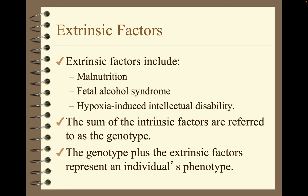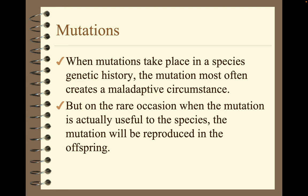Extrinsic factors include malnutrition, fetal alcohol syndrome, and hypoxia-induced intellectual disability. The sum of the intrinsic factors is referred to as the genotype. The genotype plus the extrinsic factors represent an individual's phenotype. When mutations take place in a species' genetic history, the mutation most often creates a maladaptive circumstance — but on the rare occasion when the mutation is actually useful to the species, it will be reproduced in the offspring.